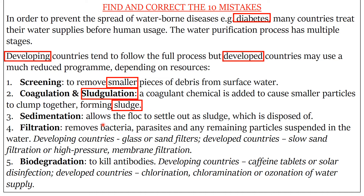Number three: sedimentation allows the floc to settle out as sludge which is disposed of. Number four: filtration removes bacteria, parasites, and any remaining particles suspended in the water. Developing countries use glass or sand filters — this should be 'ceramic'. Ceramic filters are used in developing countries. And then finally, biodegradation to kill antibodies — that should be 'disinfection'. And the correct term here would be 'pathogens', but if you had bacteria or microorganisms that's okay.